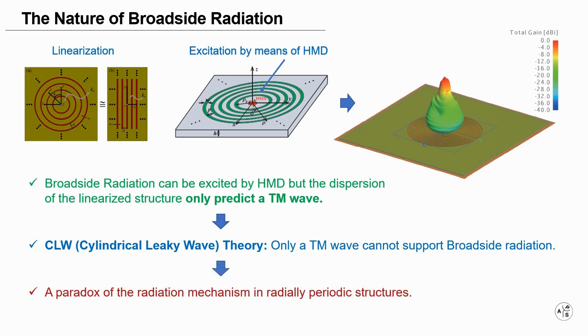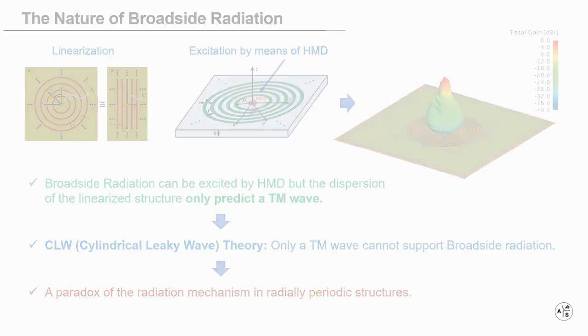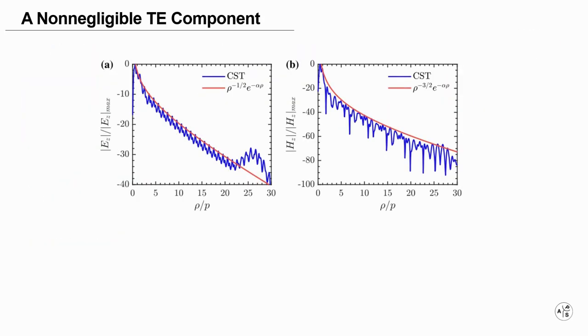To understand the reason for such a discrepancy, we investigated the role of the TE component of the excited field. We discovered that the algebraic radial decay factors of the fields are different.